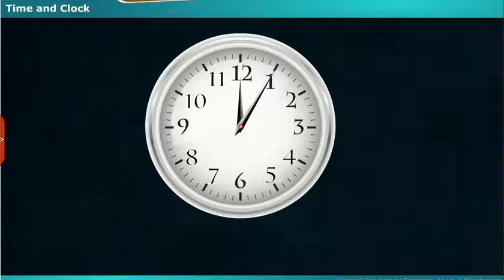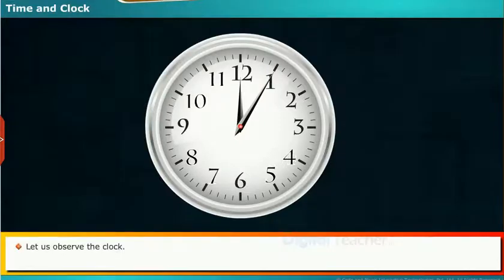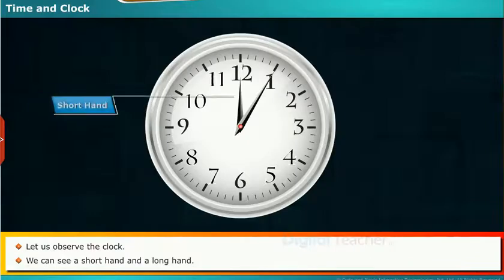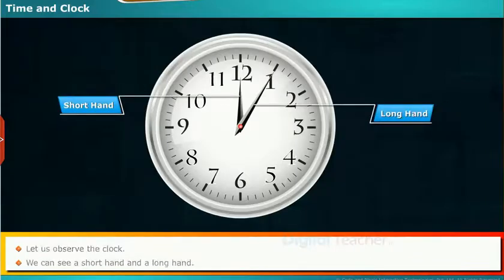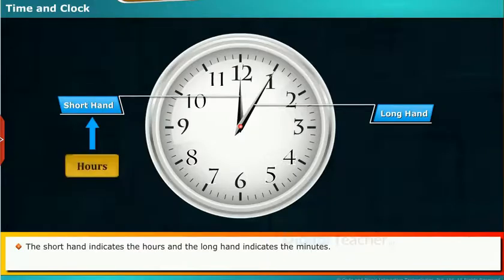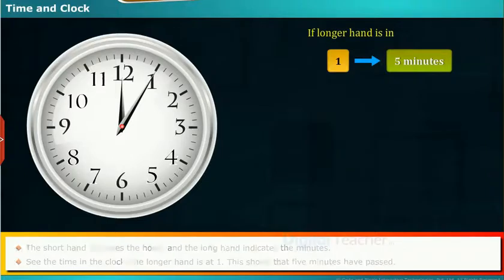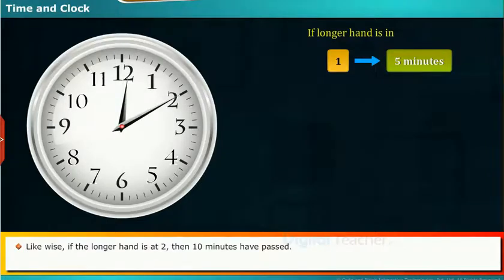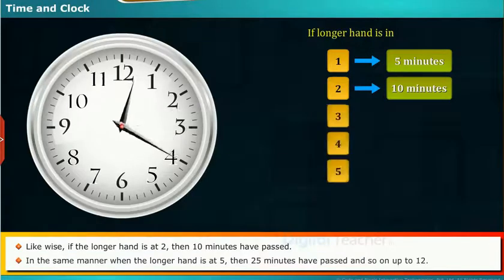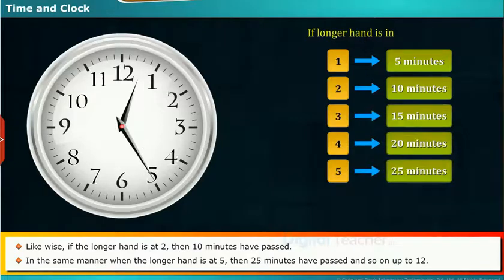Now we learn about time and clock. Let us observe the clock. We can see a short hand and a long hand. The short hand indicates the hours and the long hand indicates the minutes. See the time in the clock. The longer hand is at 1, which shows that 5 minutes have passed. Likewise, if the longer hand is at 2, then 10 minutes have passed. When the longer hand is at 5, then 25 minutes have passed, and so on up to 12.